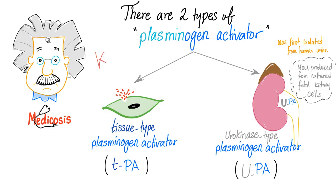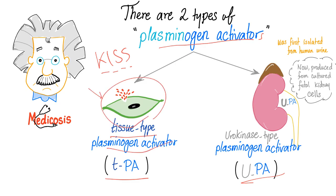Let's use the KISS principle — keep it simple. We have two types of plasminogen activators: TPA and UPA. The tissue-type plasminogen activator comes from the tissue, precisely the injured endothelium. Urokinase-type plasminogen activator was first isolated from human urine. It can also be produced from cultured fetal kidney cells and is present in the blood and in many extracellular matrix locations.